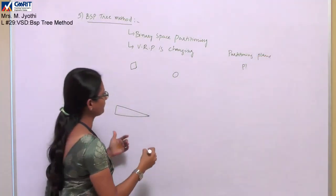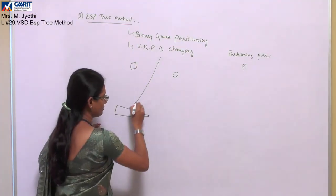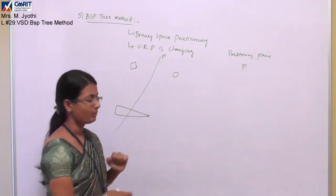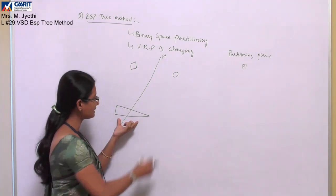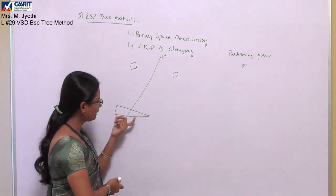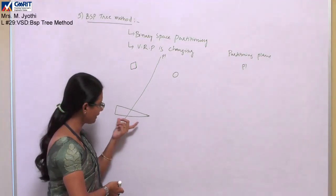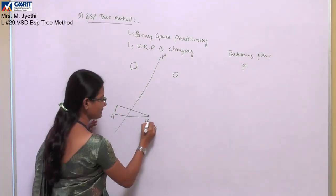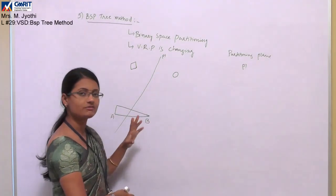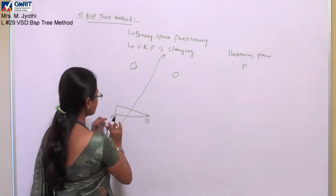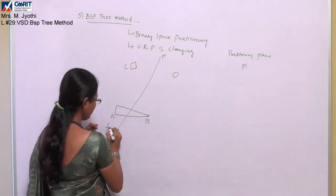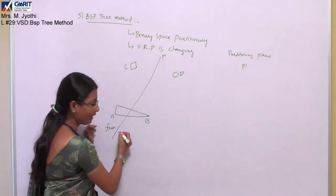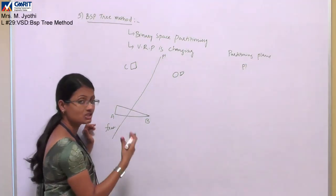P1 divides the objects into two. However, if one object intersects with the plane, we need to divide that object into two parts — let's call them A and B. This partitioning plane then divides all objects so that A and C are in front of partitioning plane P1, and B and D are behind partitioning plane P1.